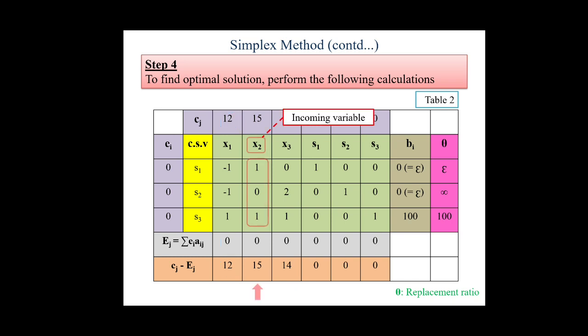Then, in cj minus ej, we will check the maximum positive value. And from there we will choose our incoming variable. That means in the cj minus ej row, the maximum positive value represents our incoming variable. And this column will be called the key column.